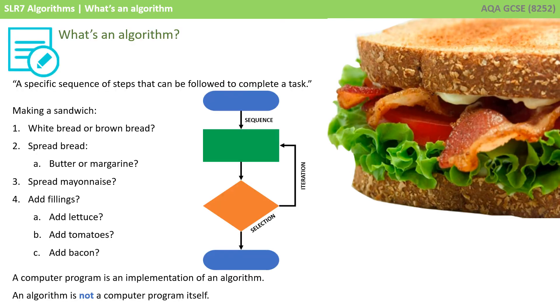It's important just to note before we move on: a computer program, something you actually code or write in a programming language, is you implementing a given algorithm. An algorithm itself is not a computer program.